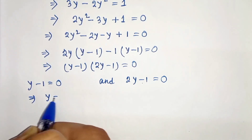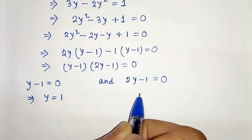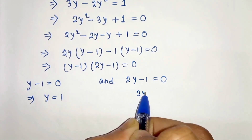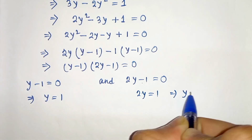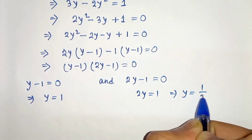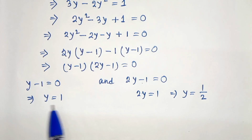From this we get y minus 1 equals 0 and 2y minus 1 equals 0. So y equals 1, and from the second factor 2y equals 1, which gives y equals 1/2. So we have two values for y: one is 1 and another is 1/2.